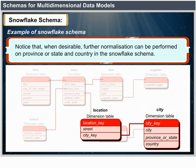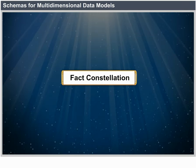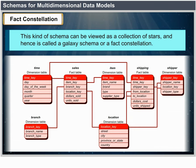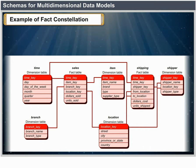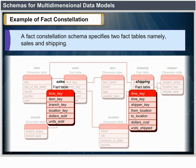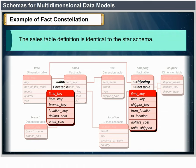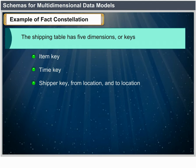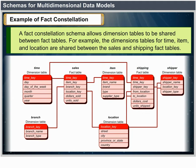Fact constellation: Sophisticated applications may require multiple fact tables sharing dimension tables. This kind of schema can be viewed as a collection of stars and is called a galaxy schema or fact constellation. Example: A fact constellation schema specifies two fact tables — sales and shipping. The shipping table has five dimension keys: item_key, time_key, shipper_key, from_location and to_location, and two measures: dollars_cost and units_shipped. A fact constellation schema allows dimension tables to be shared between fact tables — for example, the time, item and location dimension tables are shared between the sales and shipping fact tables.